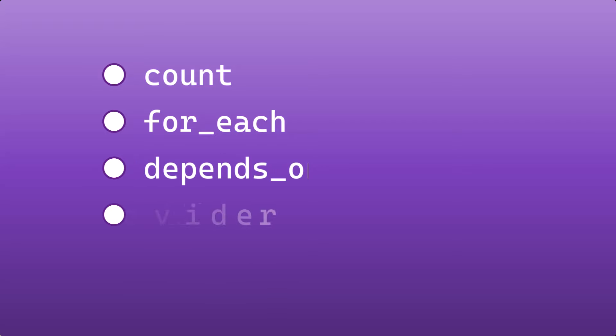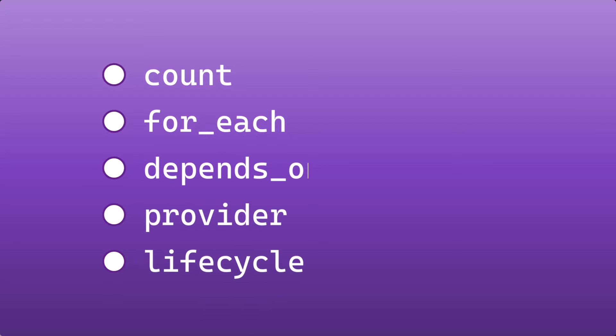To start, let's clarify what meta arguments are. Simply put, meta arguments are special arguments available in resource, data source, and module blocks that control how Terraform manages the infrastructure. These are not passed to the provider's API like other arguments. Instead, they affect the behavior of Terraform itself. In the same way that metadata is information about the data and not its actual contents, meta arguments are directives to Terraform on how to handle some aspect of the resource, and not the actual properties of the resource itself.